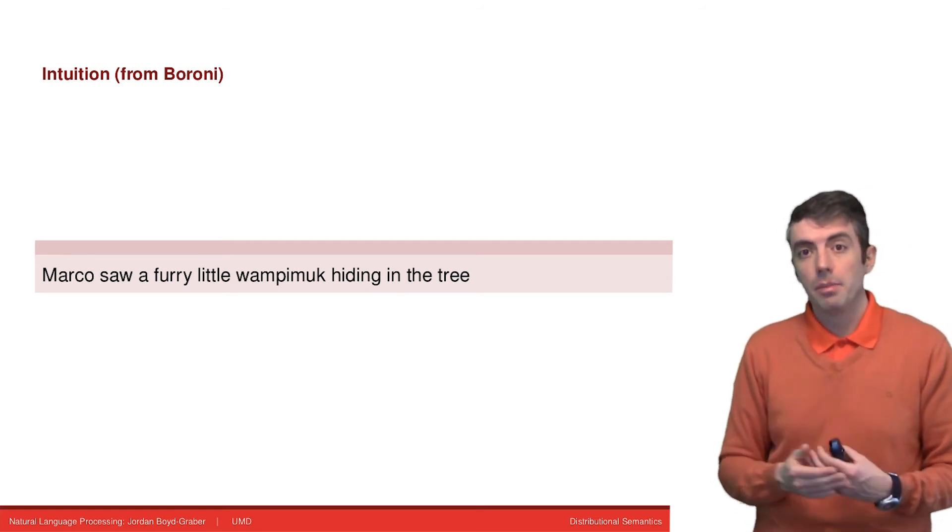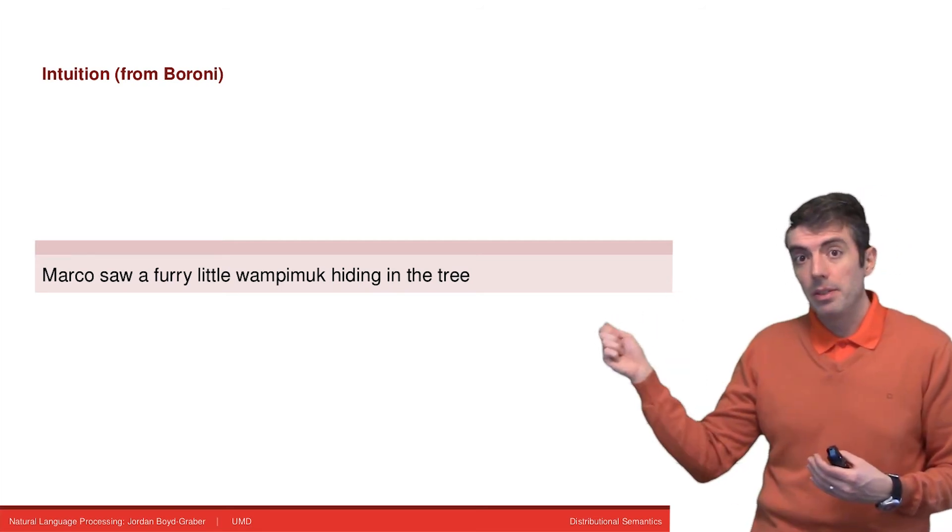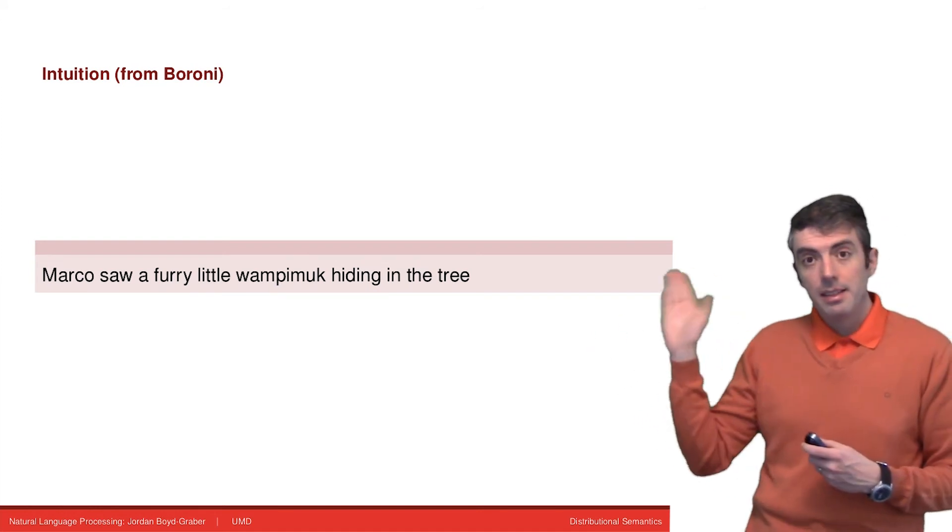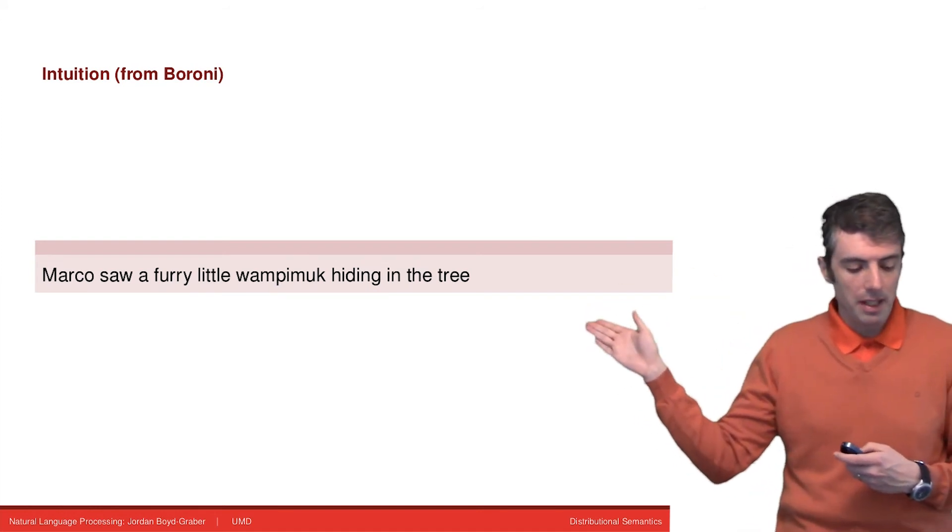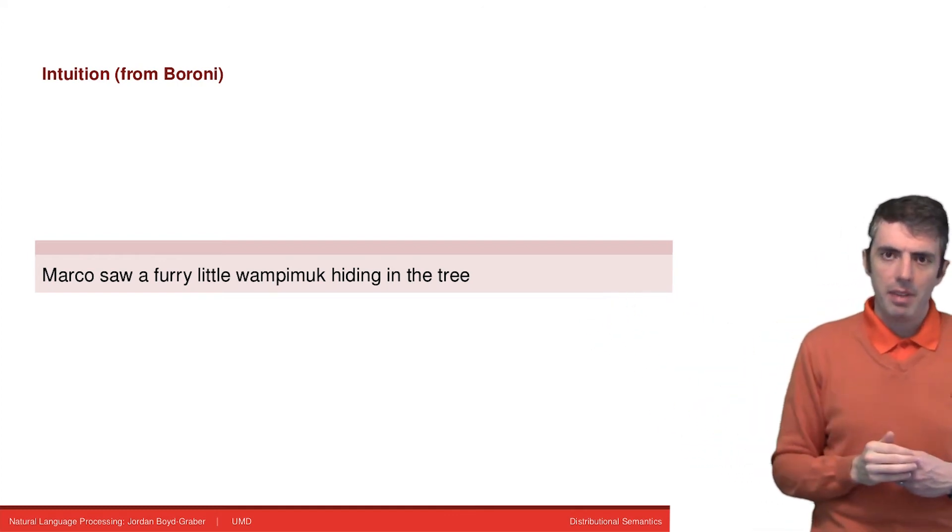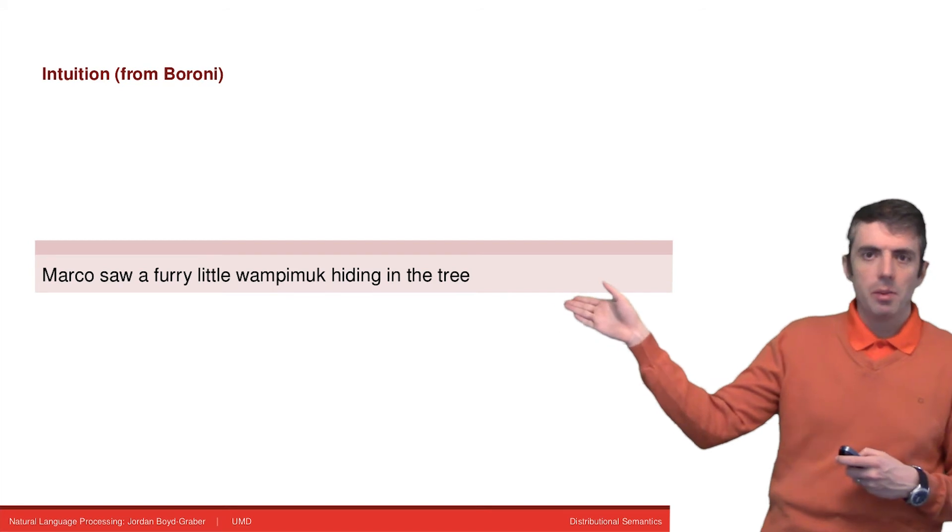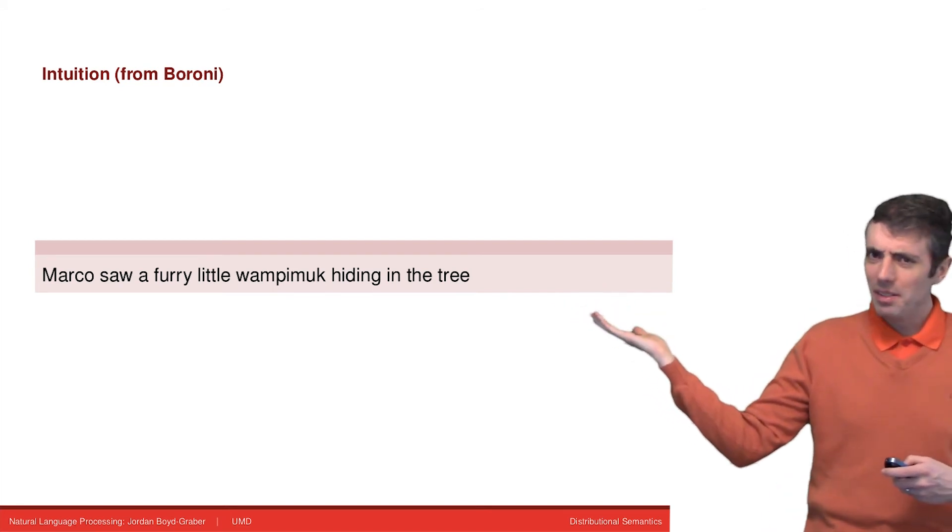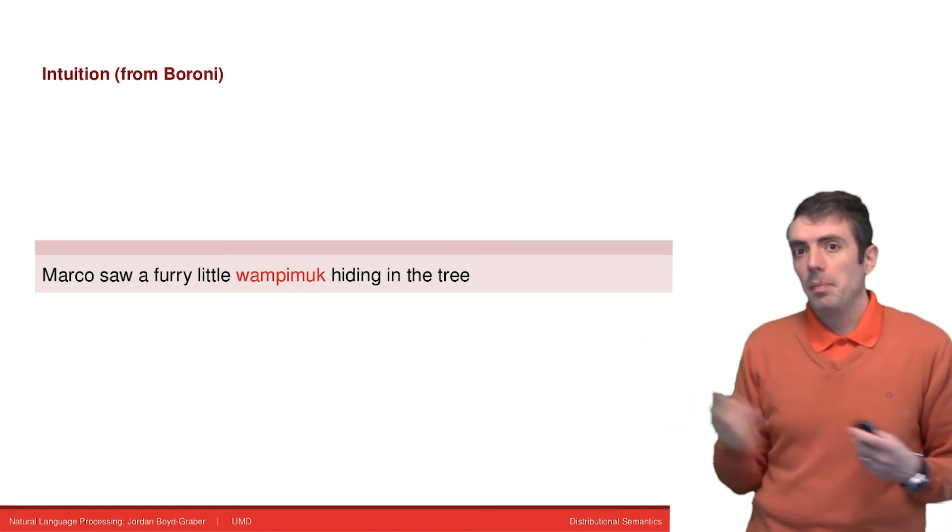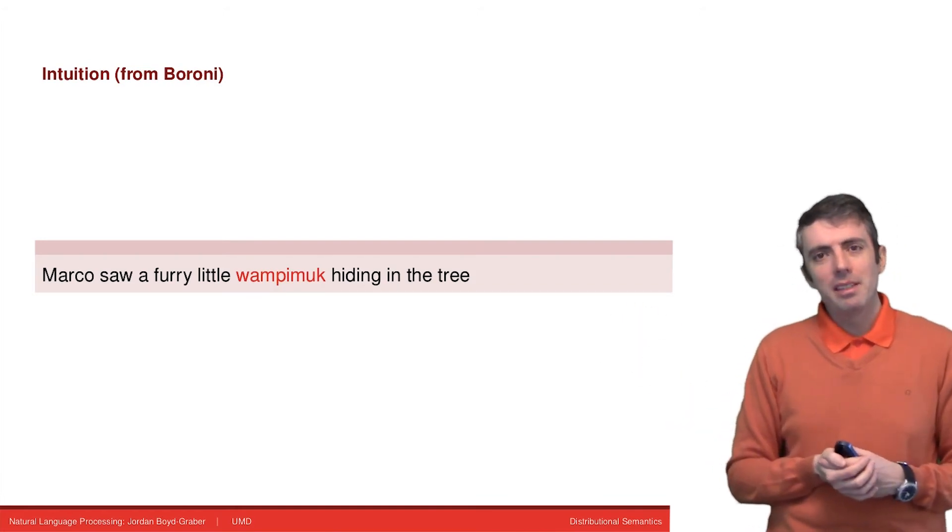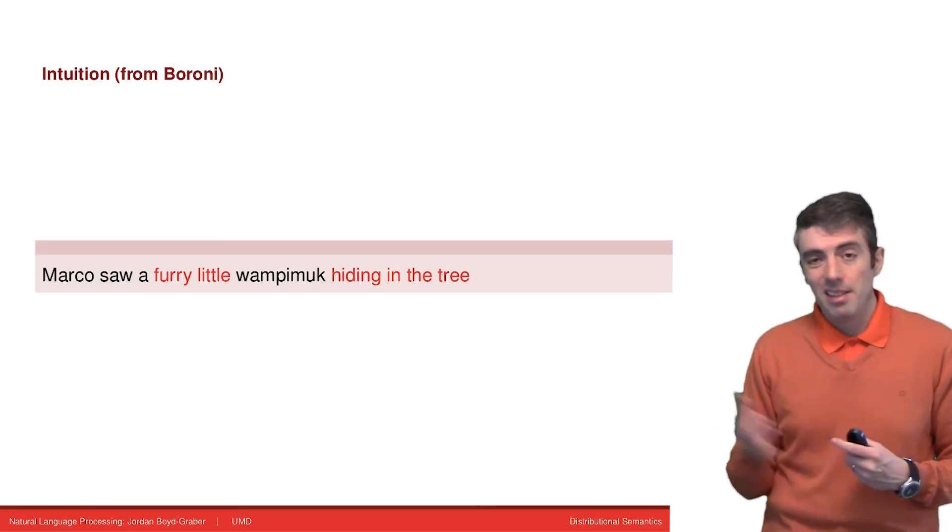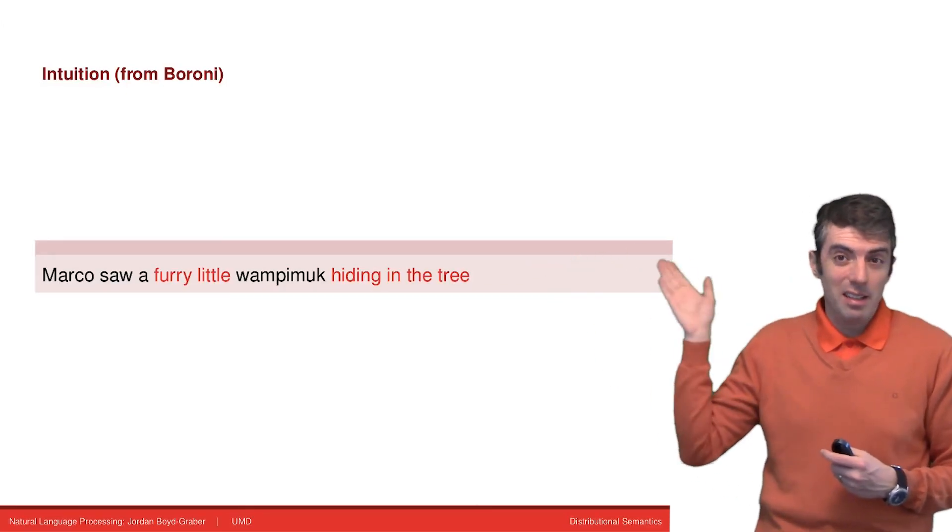Now we're going to focus on distributional semantics that you can get into vector representations. Let's see an example from Barone. Marco saw a furry little wampamuck hiding in the tree. Wampamuck is a made up word. But what do you think wampamuck actually means? You might think, well, maybe this is like a squirrel or a chipmunk. And why do you think that? It's a furry little thing that lives in a tree.